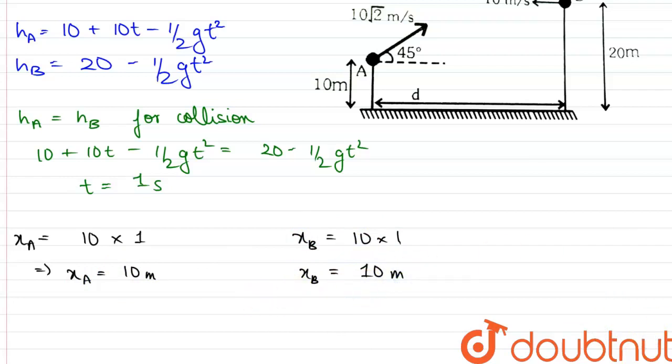Therefore, the total distance D should be equals to xA plus xB, and this implies that D is equals to 20 meters.